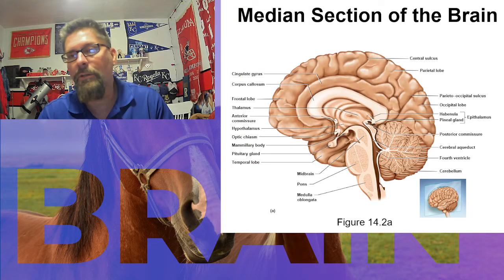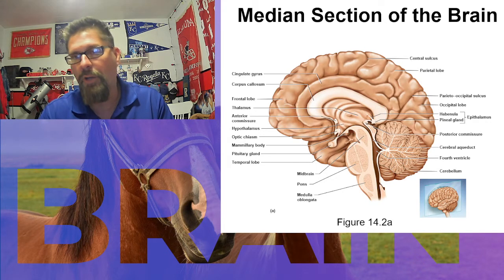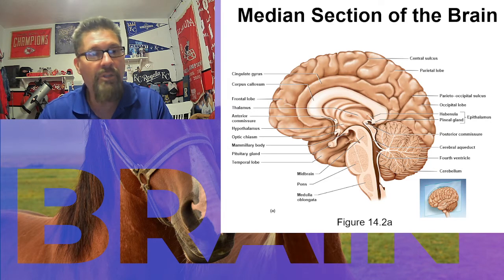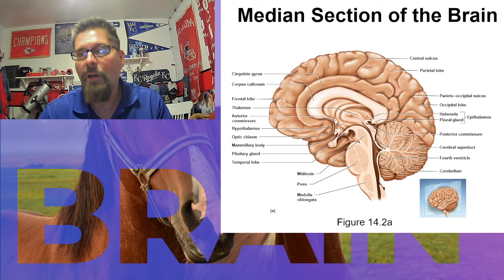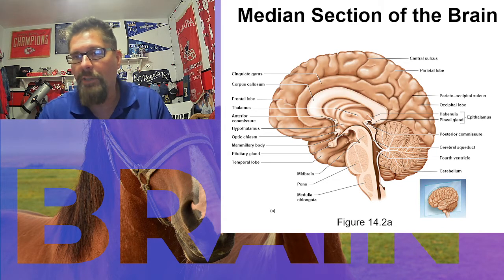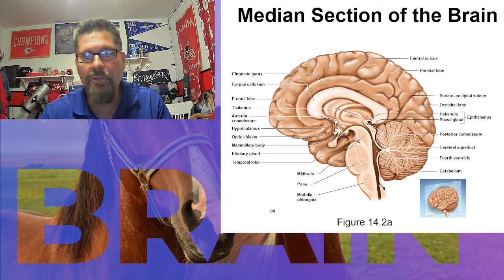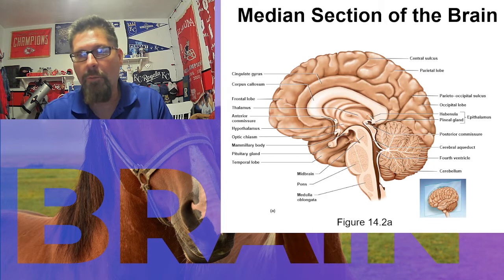Here is a diagram of the brain — this isn't necessarily something you need to memorize unless discussed in class. Looking at the brain stem, you can see the midbrain at the top, the pons in the middle — that thick, beefy area like a thigh muscle — and the medulla oblongata below, a bit smaller, like a calf muscle.